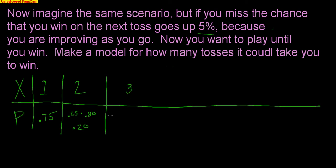What about three darts? I missed the first time — 25% chance. The second time I have an 80% chance to win, but I miss, which is 20%. And now I have 0.85 for that third dart. Every time I miss, I get an extra 5% better chance of winning, so it's now at 85%. So 0.25 times 0.20 times 0.85 equals 0.0425.